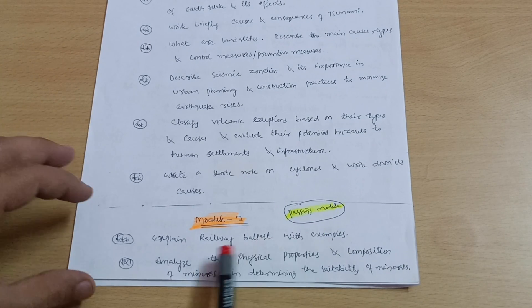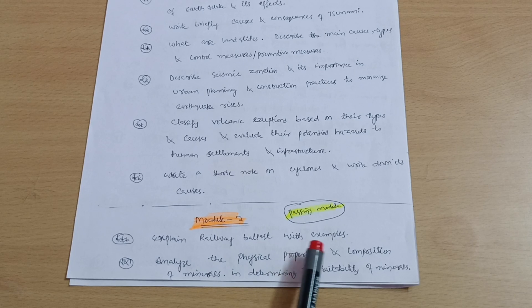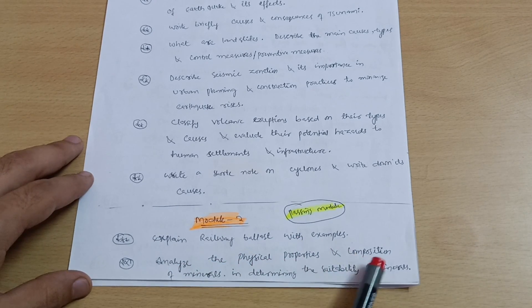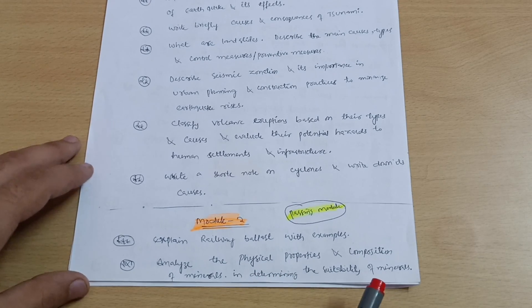Last but not least may be write a short note on cyclones and write down its causes. These are the most important questions which will appear in the examination. This is all about Module 1. Now let me proceed with Module 2, which is again a passing module in which you have to cover: explain igneous rocks with examples.